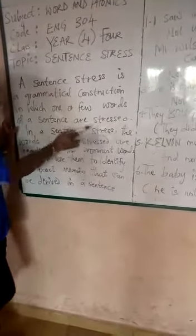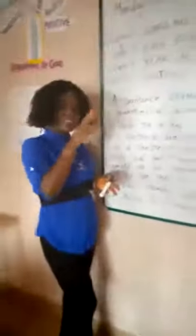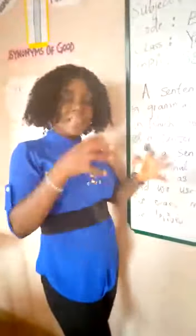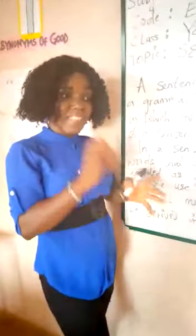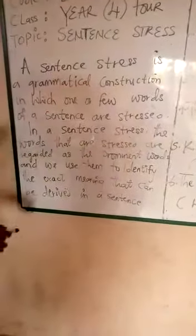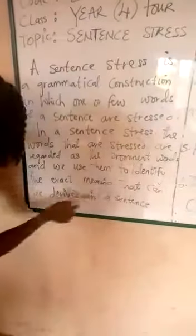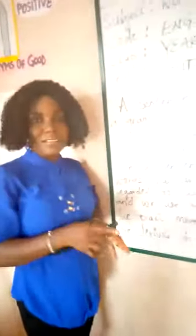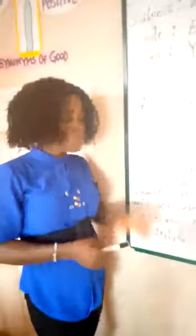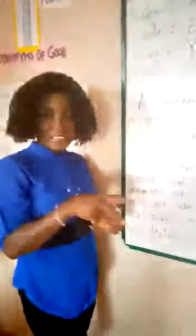What the sentence is trying to tell us is that in a particular sentence, one word may be stressed. And the essence of stress in that word is to give the reader an idea of what that particular sentence is talking about — to have the exact idea or meaning. In sentence stress, the words that are stressed are regarded as the prominent words, and we use them to identify the exact meaning that can be derived in a sentence.